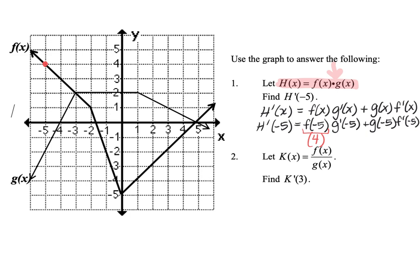Now we need to multiply that by the derivative of g at negative 5. The derivative is the slope of the tangent line to the curve at negative 5. Going to negative 5 on function g, we don't want the y value — we want the slope. Since this is a linear piece, we can count: up 2 and right 1, so the slope is positive 2. Therefore, g prime of negative 5 is positive 2, and we multiply 4 times 2 for the first part of the product rule.